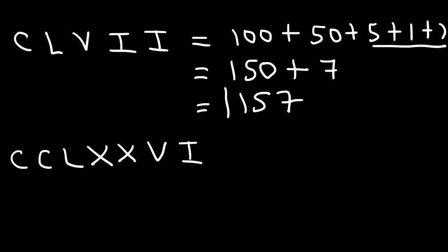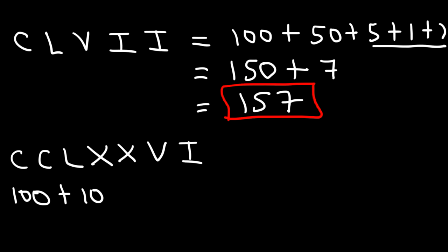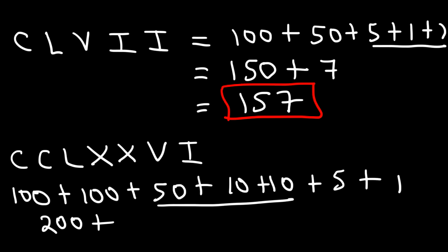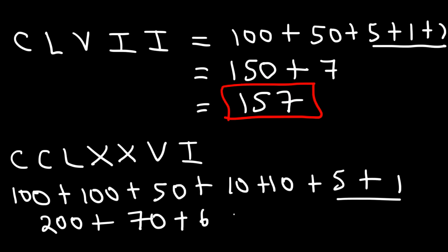For CCLXXVI: we have C plus C, which is 100 plus 100, that's 200. Then L is 50, and we have two X's, which is 10 and 10. V is 5, and I is 1. So 50 plus 10 plus 10 is 70, and 5 plus 1 is 6. This adds up to 276.